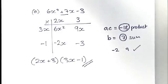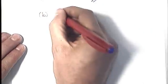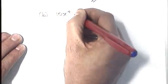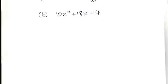OK, so I'll take you through a second example, just so you get a second viewing of the method here. This is question B. We're going to do 10x squared plus 18x minus 4.